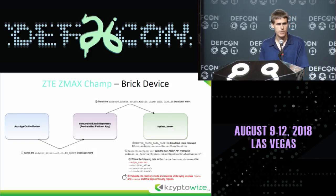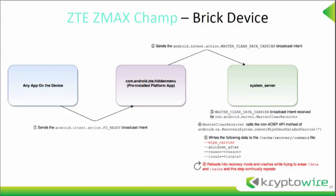Here's the workflow: a zero-permission third-party app sends a broadcast intent to an application that has 'hidden menu' in its package name. It receives it, then sends a different broadcast intent called 'master clear data carrier,' which is received by the master clear receiver in system server. At this point it calls a non-AOSP API method in RecoverySystem called rebootWipeUserDataAndCarrier. It writes that file shown in step 5 — there's '--wipe_carrier' which is not part of AOSP — writes it to that file, reboots into recovery, and then perpetually crashes in recovery mode.